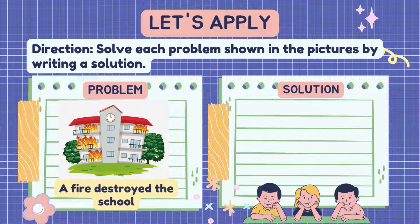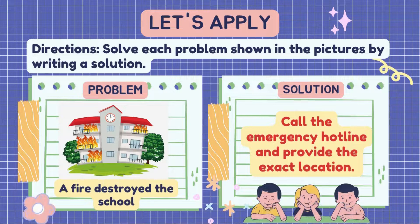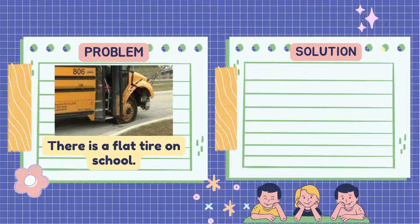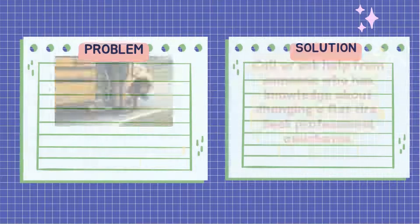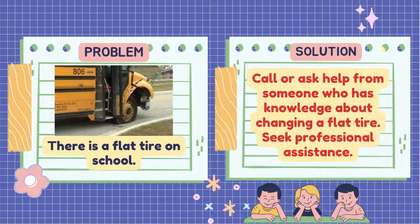Now it's time to apply what we have learned. Direction: Solve each problem shown in the pictures by writing a solution. The first problem is: a fire destroyed the school. What do you think is a possible solution for this problem? Here is the sample solution — answers may vary: call the emergency hotline and provide the exact location. There is a flat tire on the school vehicle. Here is the sample solution — answers may vary: call or ask help from someone who has knowledge about changing a flat tire, or seek professional assistance.